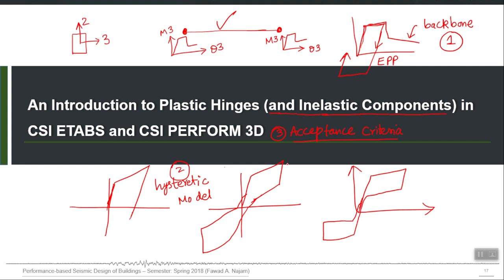The backbone and hysteretic model together form the action-deformation curve. Both components one and two represent the action-deformation behavior, and the third component consists of three capacities placed on top of that curve — three capacities for which we want the program to calculate demand-to-capacity ratios.